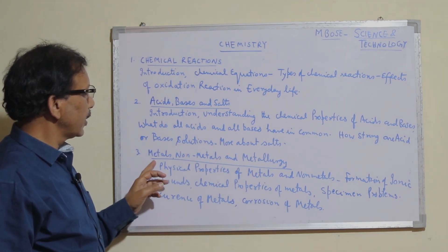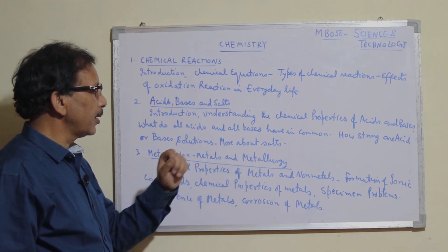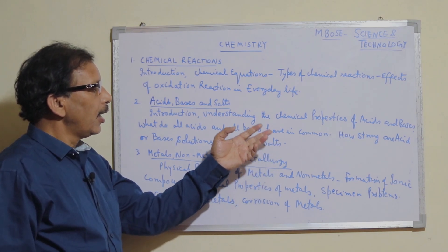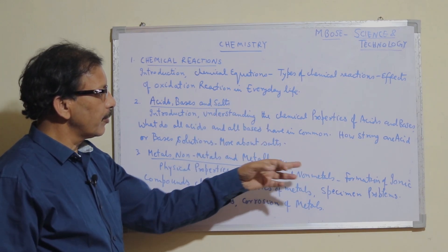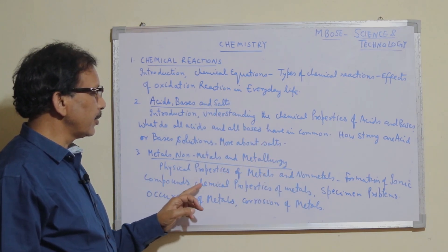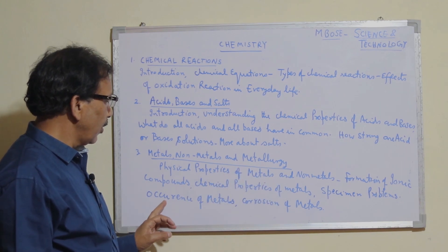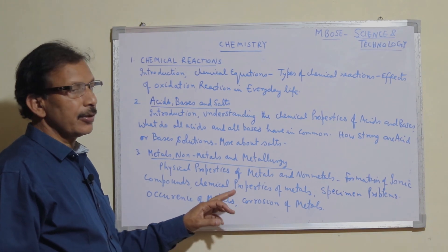Metal, non-metal, and metallurgy covers physical properties of metals and non-metals, formation of ionic compounds, chemical properties of metals, specimen problems, occurrence of metals, and corrosion of metals.